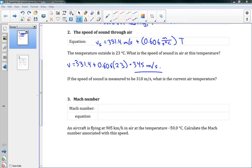The next one says, if the speed of sound is measured to be 318 meters per second, what is the current air temperature? Well, we have V is equal to 331.4, plus 0.606 T. We can rearrange this to say that T is equal to V minus 331.4, divided by 0.606. And we can put in our speed now, 318, minus 331.4, over 0.606. And this gives us a value of negative 22.1 degrees Celsius. Again, fairly straightforward doing this.